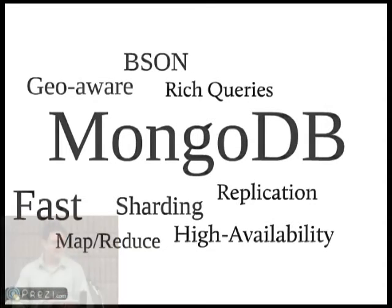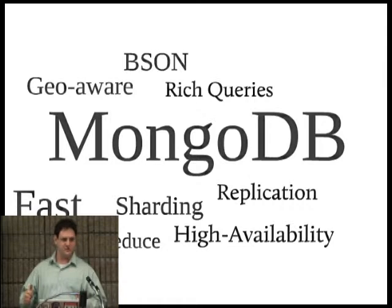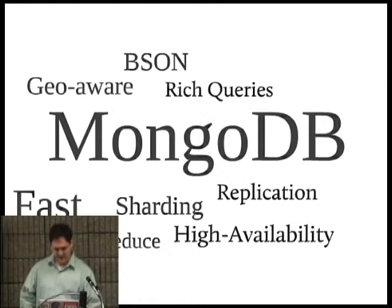The one I've been playing in the most is MongoDB. MongoDB has lots of features. It's very, very fast. It supports sharding. It supports MapReduce functionality. It has high availability and replication. It does have some geo-functionality. It supports rich queries, and it's just a great database.